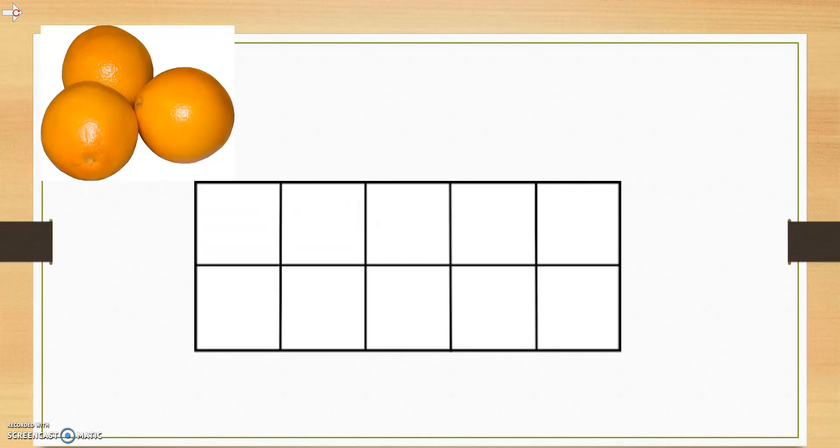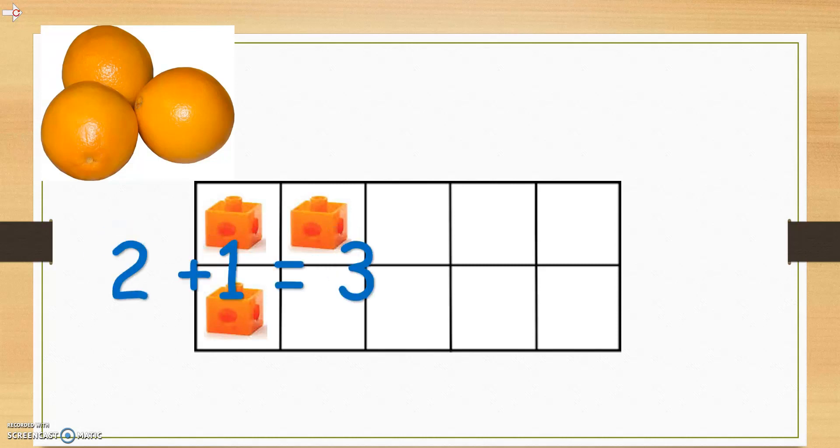For example, we could put it in 1, 2, 3. Here, we can see the number bond between numbers. Showing us that 2 plus 1 equals 3.